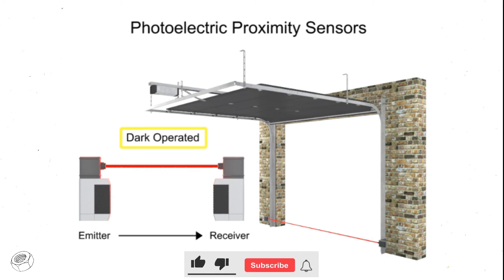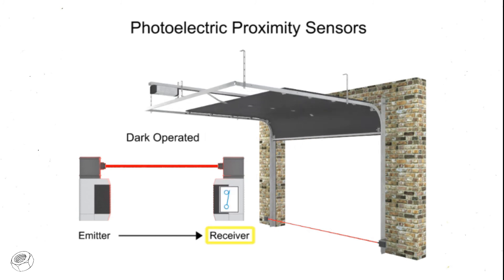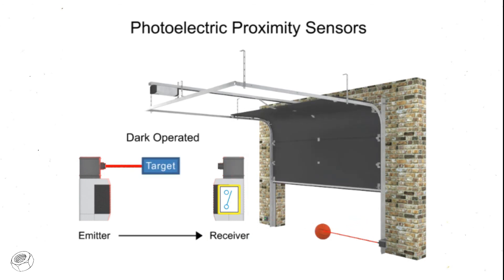In this dark-operated mode example, the beam of light is being received by the garage door receiver. When a target enters the beam of light, it activates the switch, which will stop the garage door from closing.